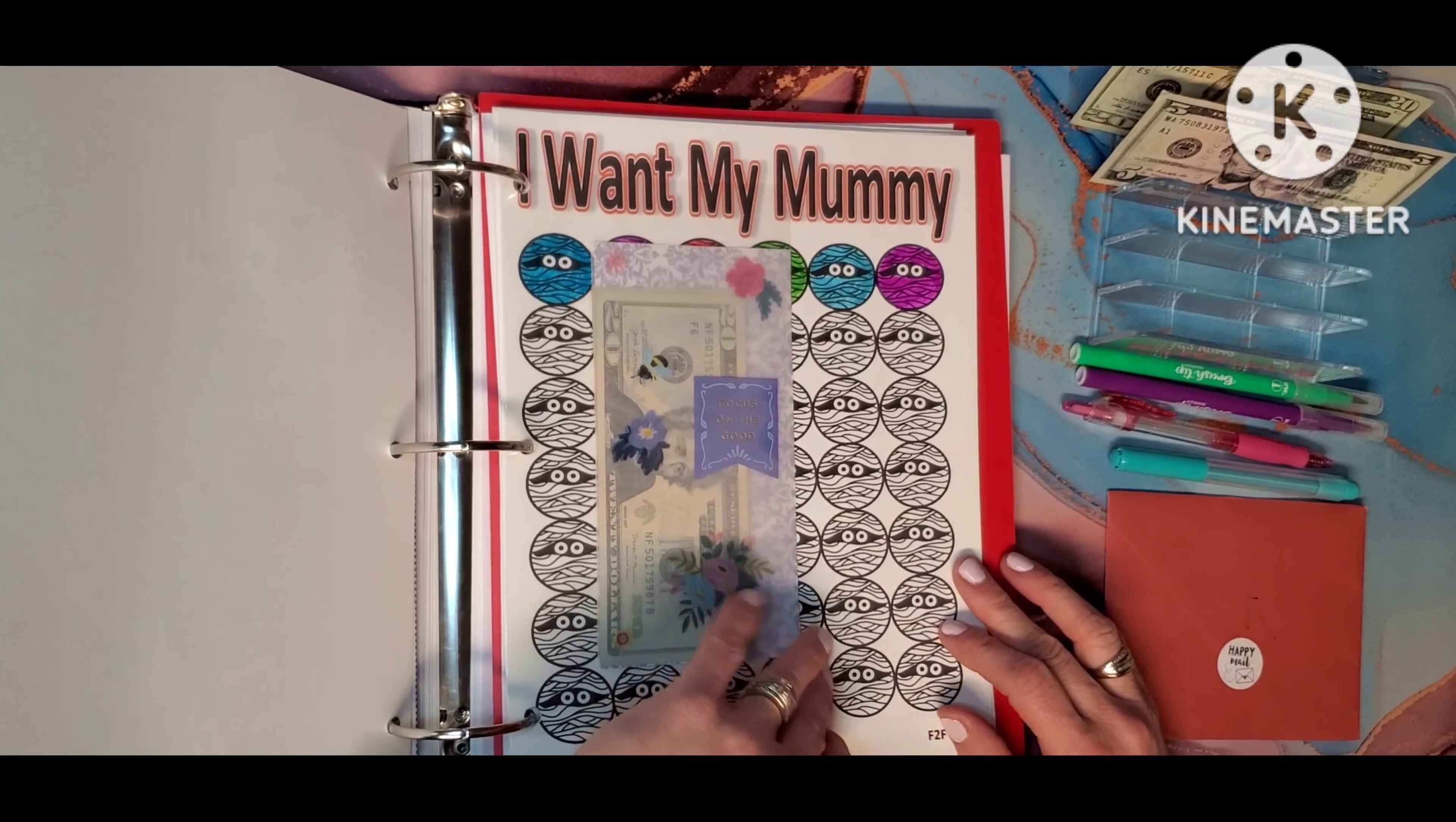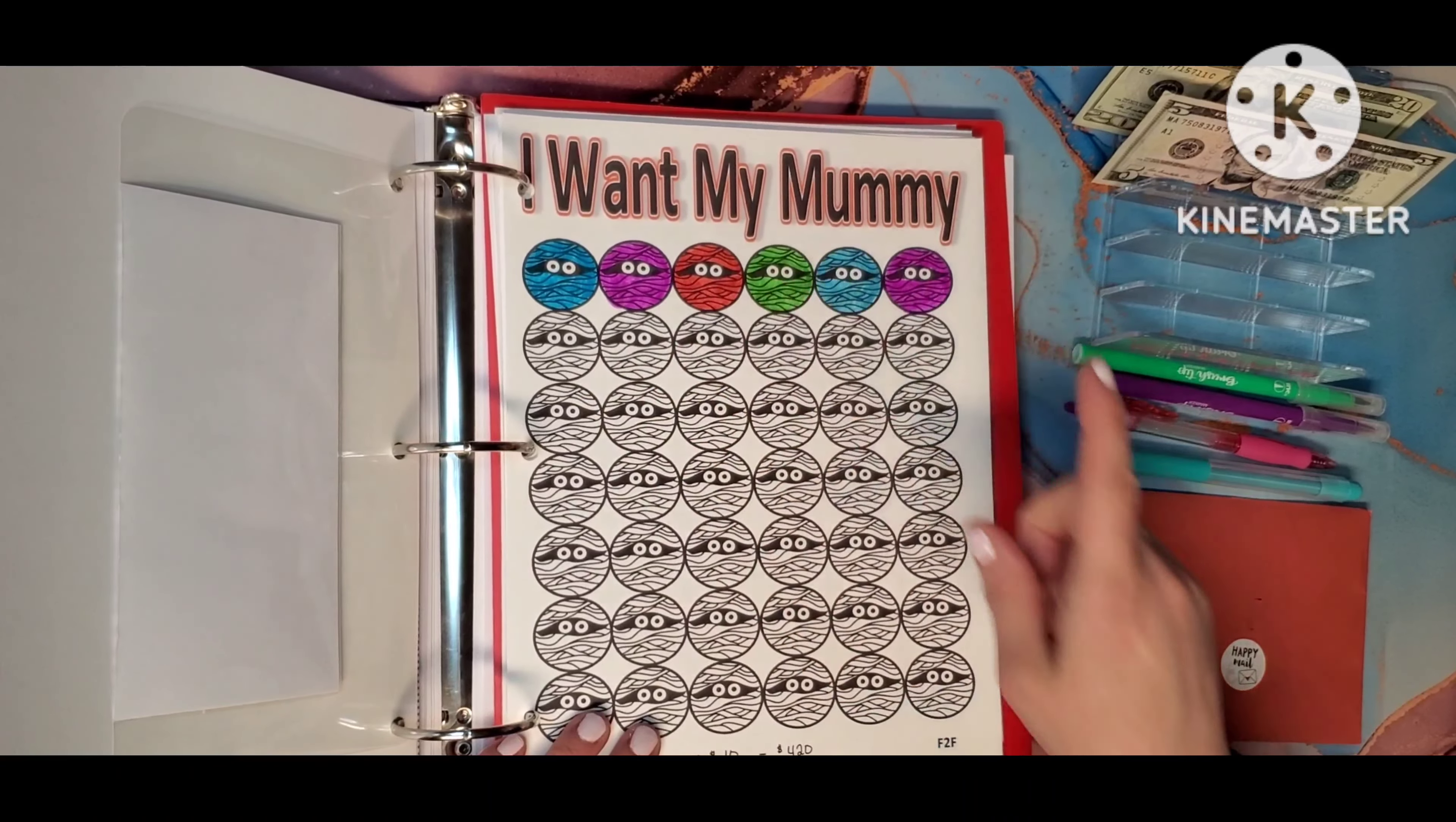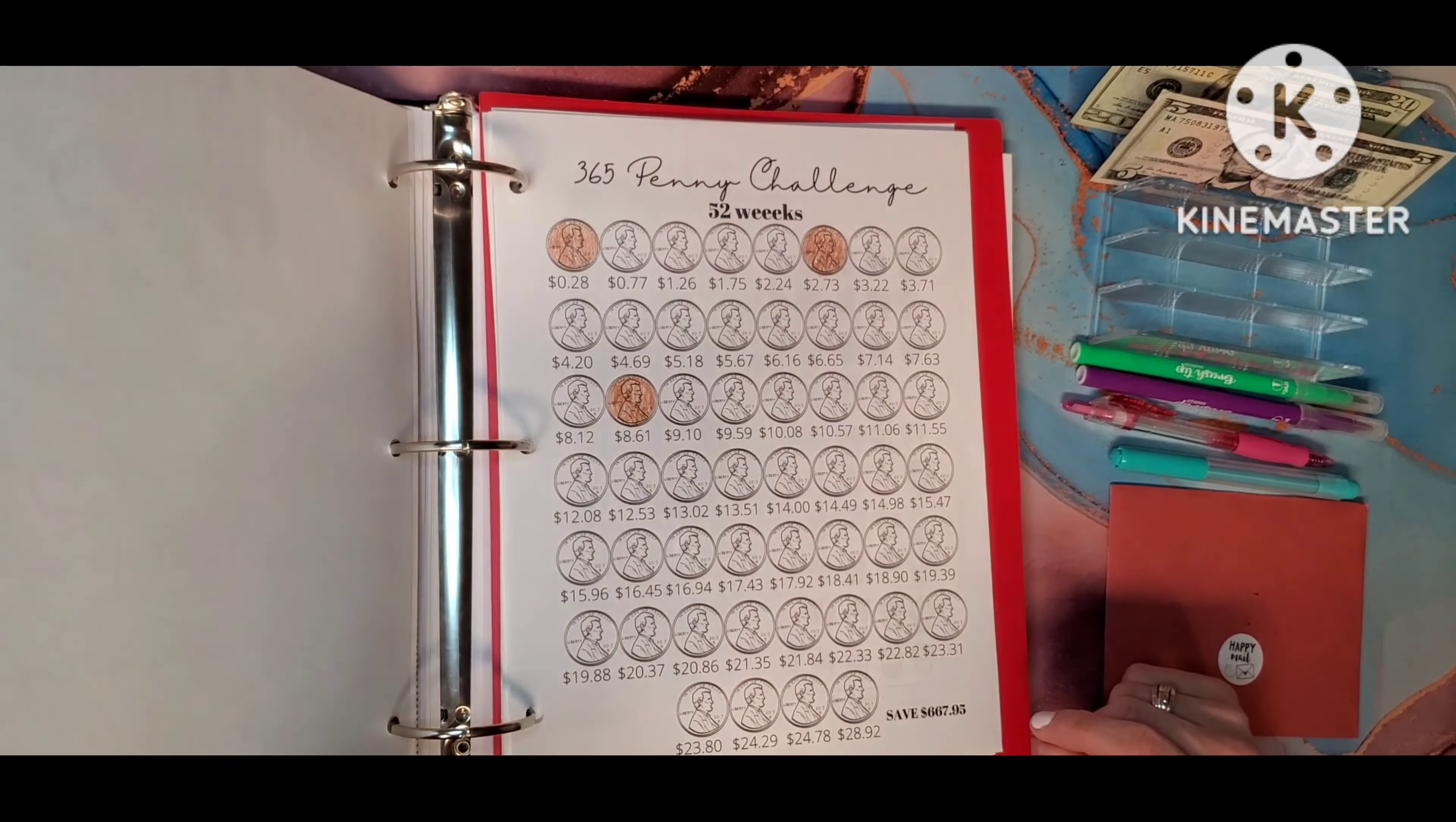This challenge is the I want my mummy challenge. This challenge is by Michelle at Free to Fly. I am not going to be able to put any money in this this week because I am trying to do another challenge, but this is going to be to save up money. Each one of these is ten dollars and it will save up four hundred twenty dollars when I get done. And that will allow me to take a trip to go see my parents, or I want my mummy. I think this is fun and I think it's really fun coloring them all in wild colors. But this week is going to have to wait.